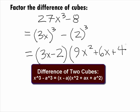Plus taking the product of the two bases, which is 6x, plus and then squaring that 2 to get 4.